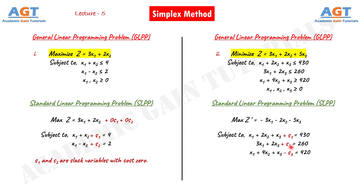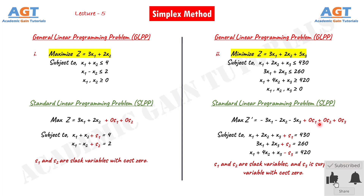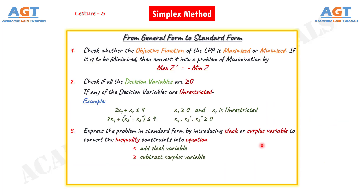Here s1 and s2 are slack variables, and s3 is a surplus variable, all with cost zero. Since we have introduced s1, s2, and s3 in our equations, we also have to write them in the objective function: 0·s1 plus 0·s2 plus 0·s3, since the cost of slack and surplus variables is zero. So when we have a less than or equal to sign we add a slack variable to the smaller side, and when we have a greater than or equal to sign we subtract a surplus variable from the larger side. That was the third step.